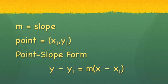So we have a slope of m, we have a point x1, y1, and the point-slope form is simply y minus y1 equals m times x minus x1, and that is the form for the point-slope equation for a line.